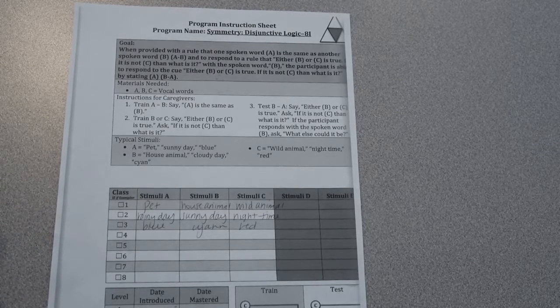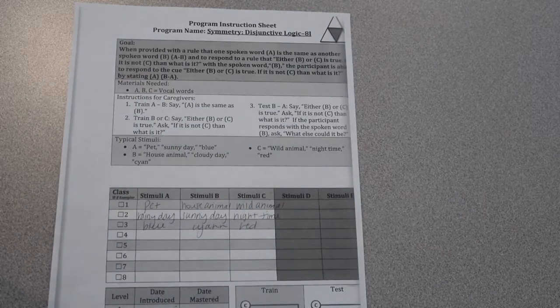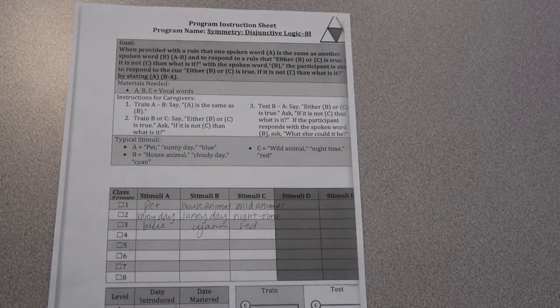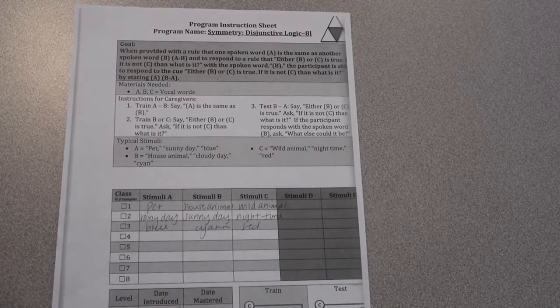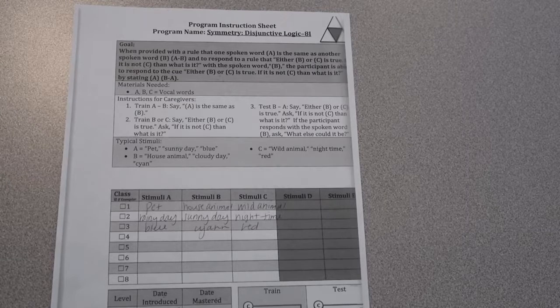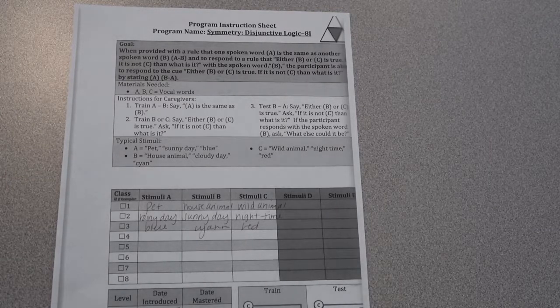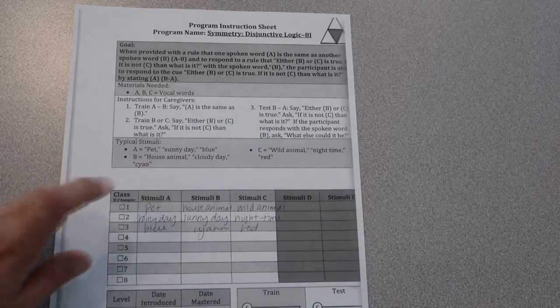So what we might do is say, you know, either house animal or wild animal is true. If it is not wild animal, then what is it? They're probably going to say house animal, and then you could say what else could it be, and they would hopefully say pet. That would give them the ten. So saying house animal isn't incorrect, but it's not going to give them a ten. What else could it be is what you need so you can get them to A.